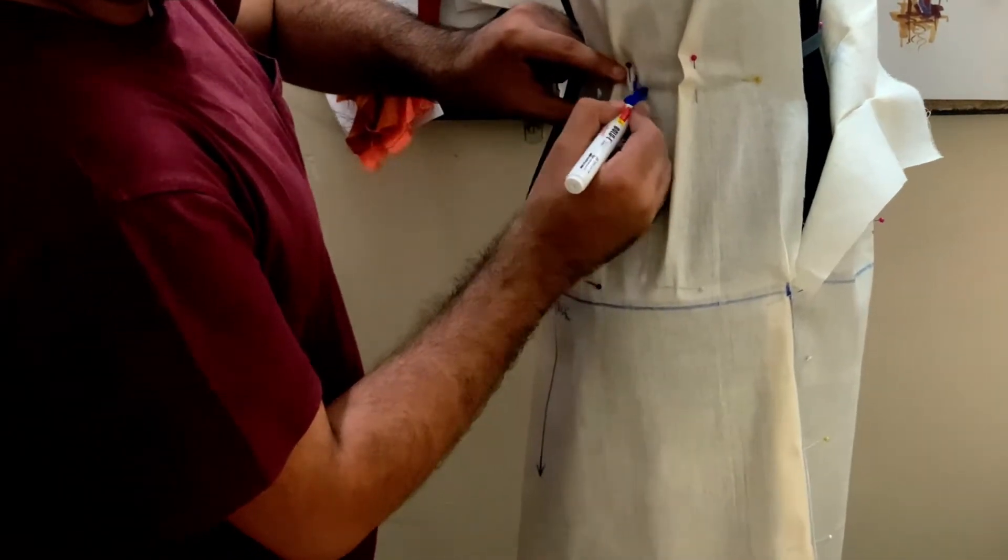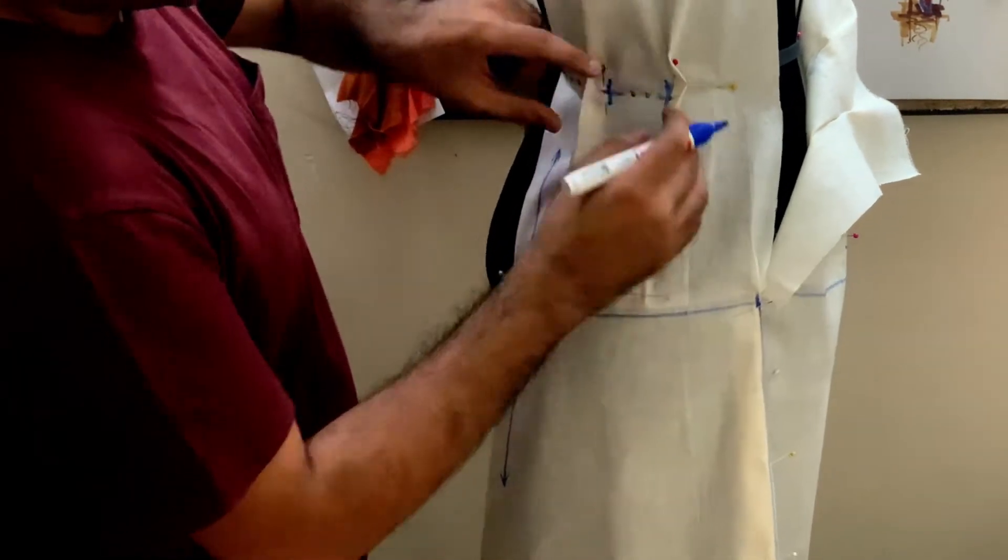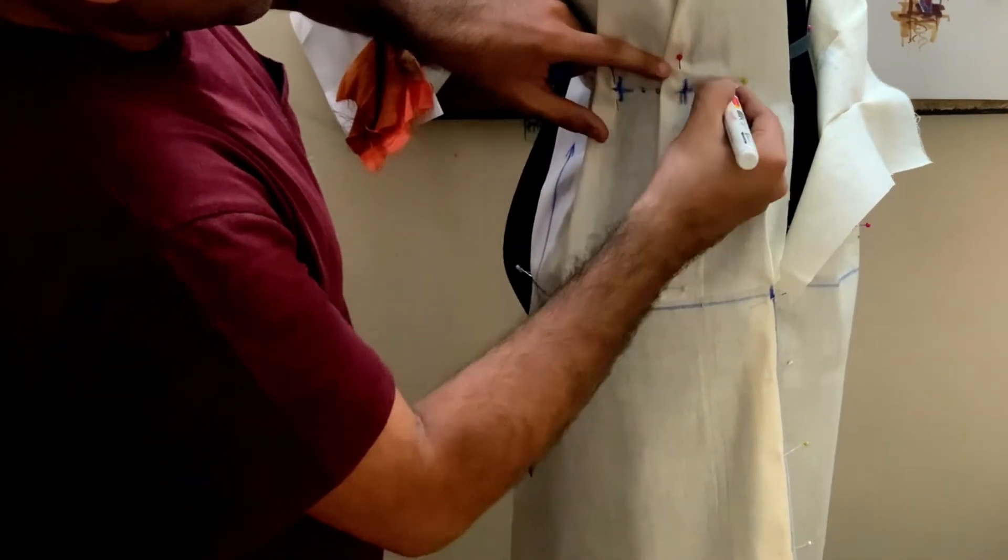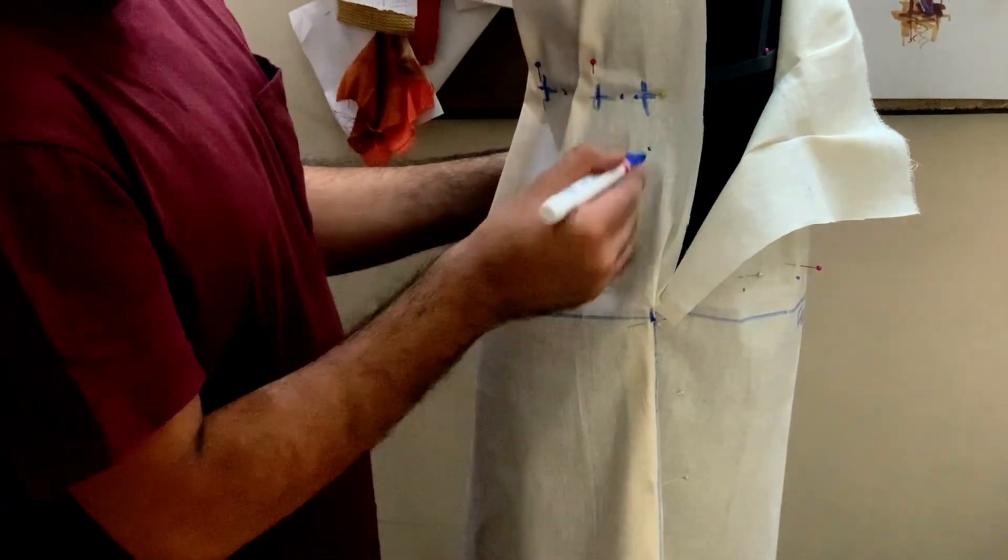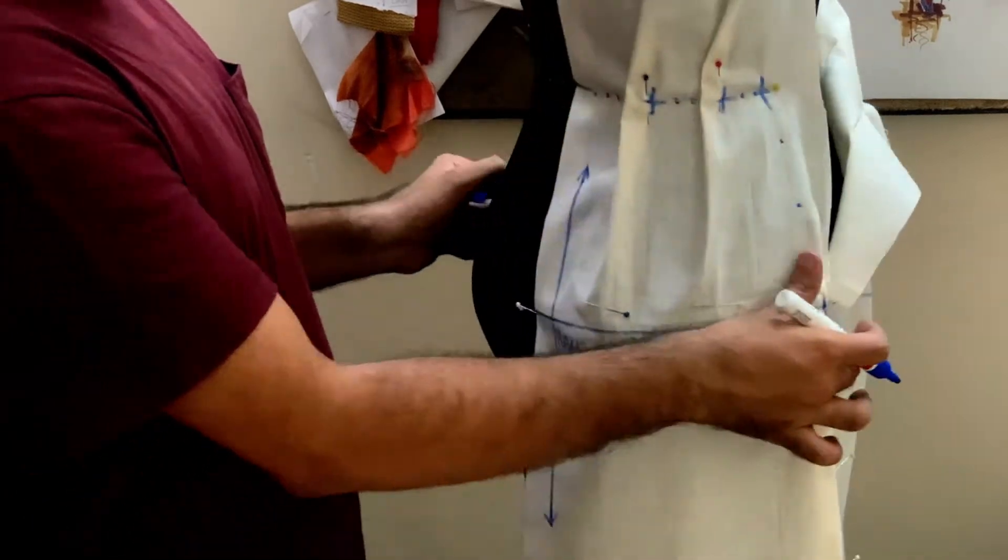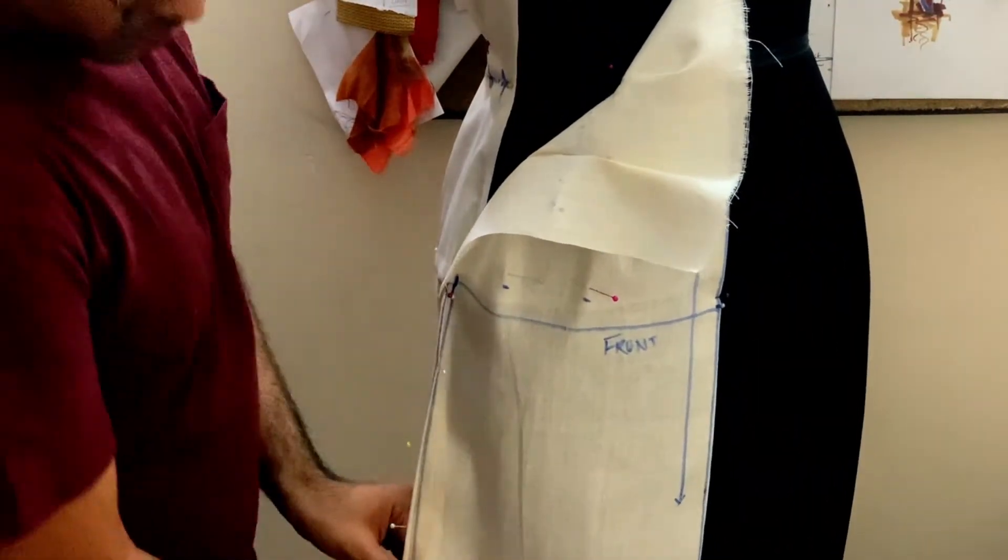And then take the cross marks like the way we did it in the front. Take your dotted marks for the side seam hip curve, and then you remove it from the dress form to start truing the darts and converting them into a final test fit.